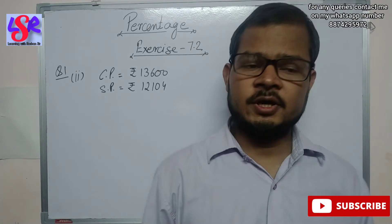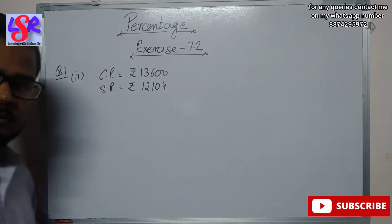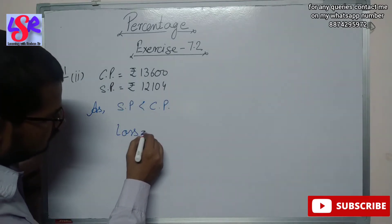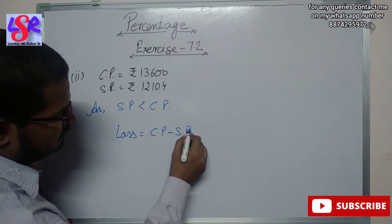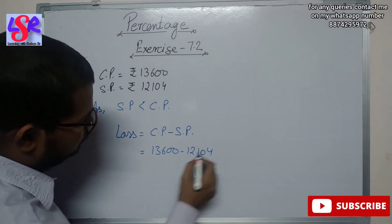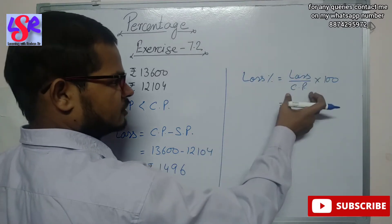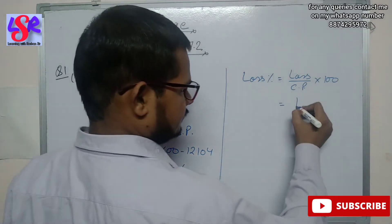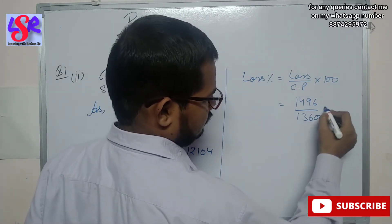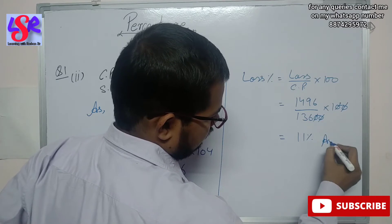Now for the second part, CP equals 13,600 and SP equals 12,104. As SP is smaller than CP, it is a case of loss. Loss equals CP minus SP, that is 13,600 minus 12,104, which gives 1,496. Loss percent equals 1,496 upon 13,600 into 100; the two zeros are cancelled out and on dividing we get 11% as the answer.